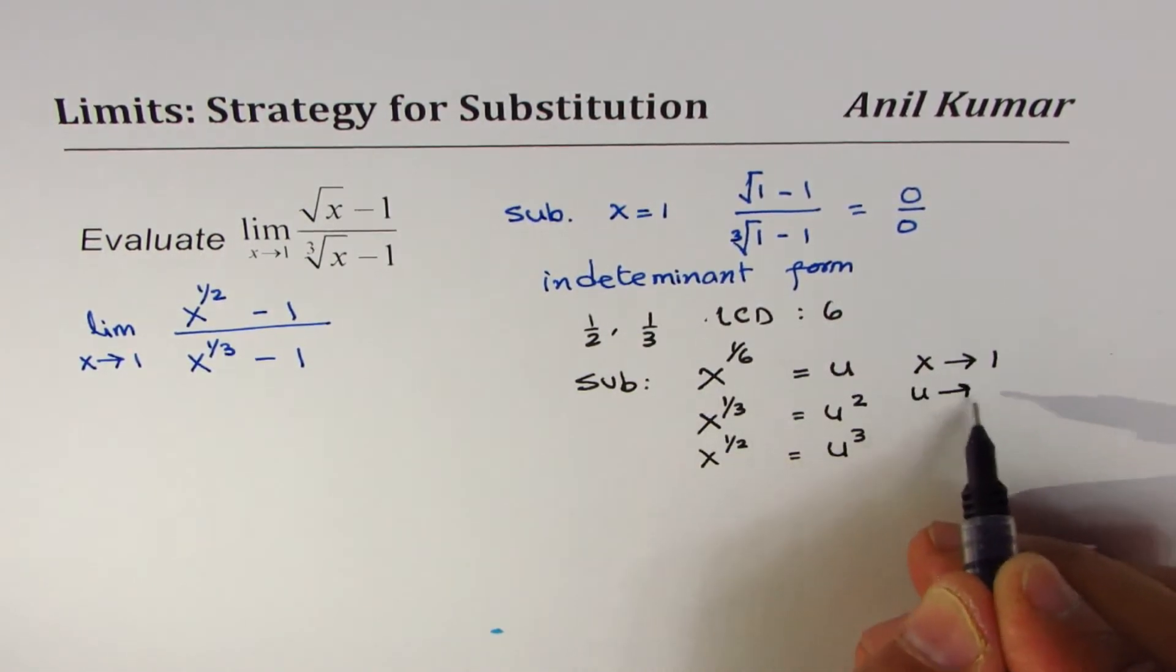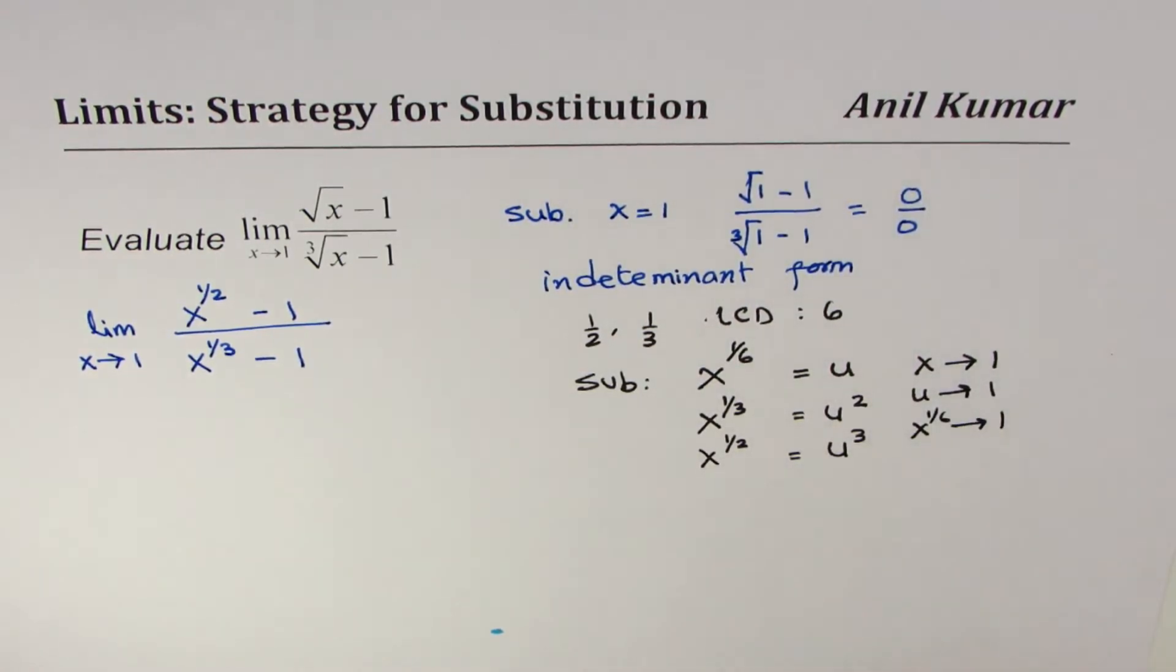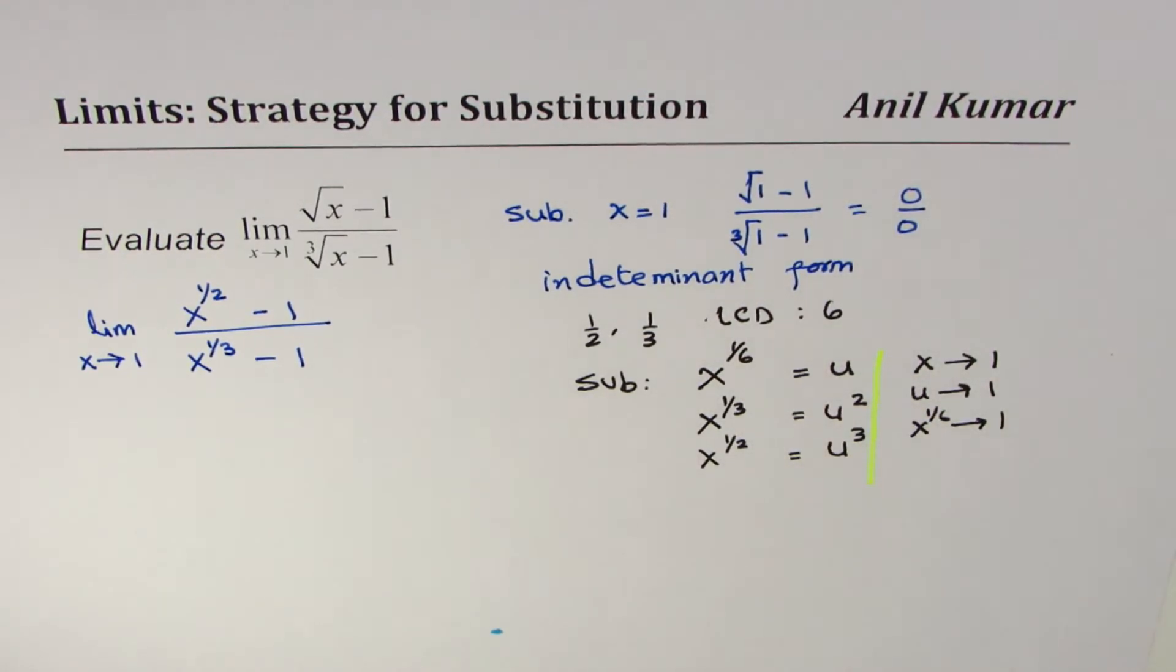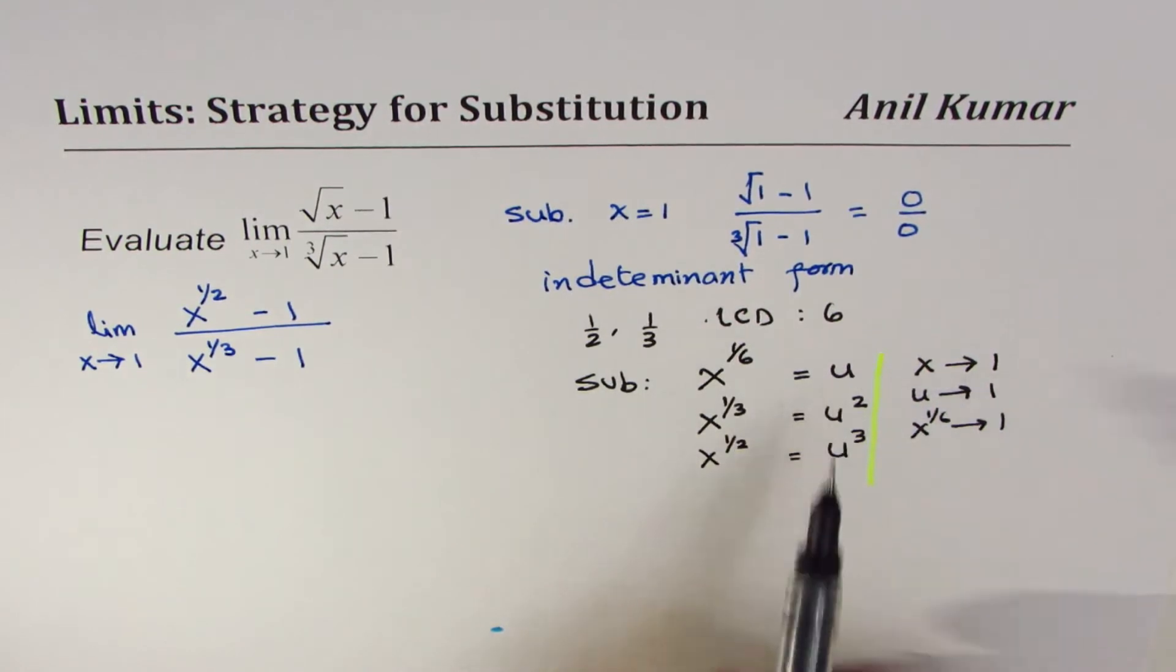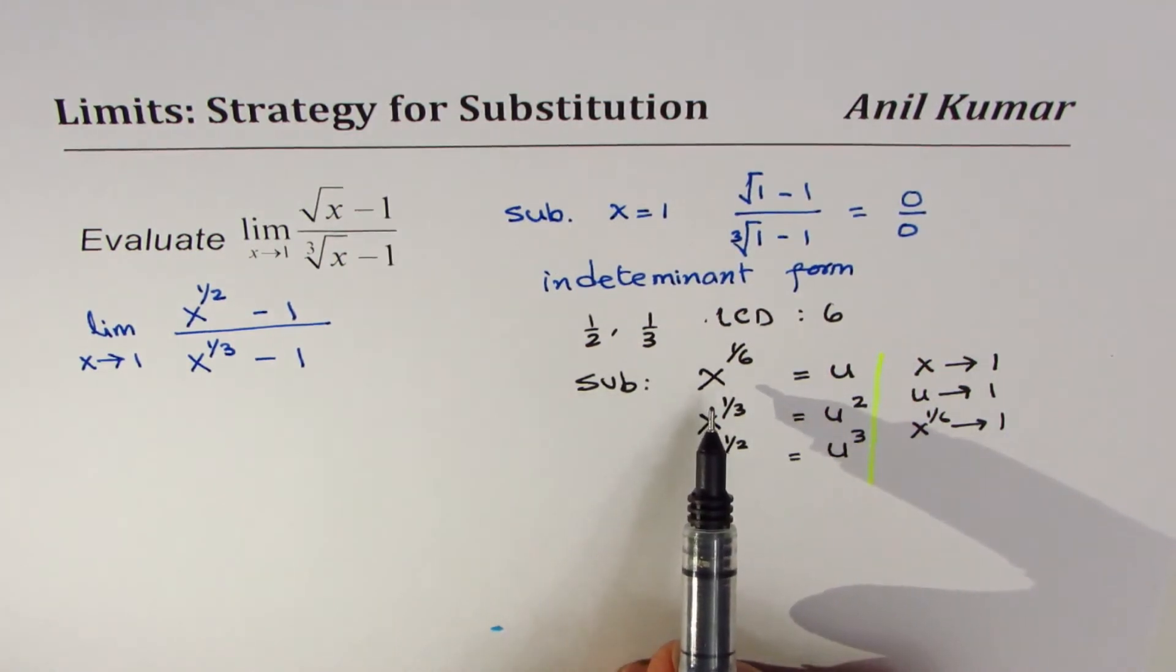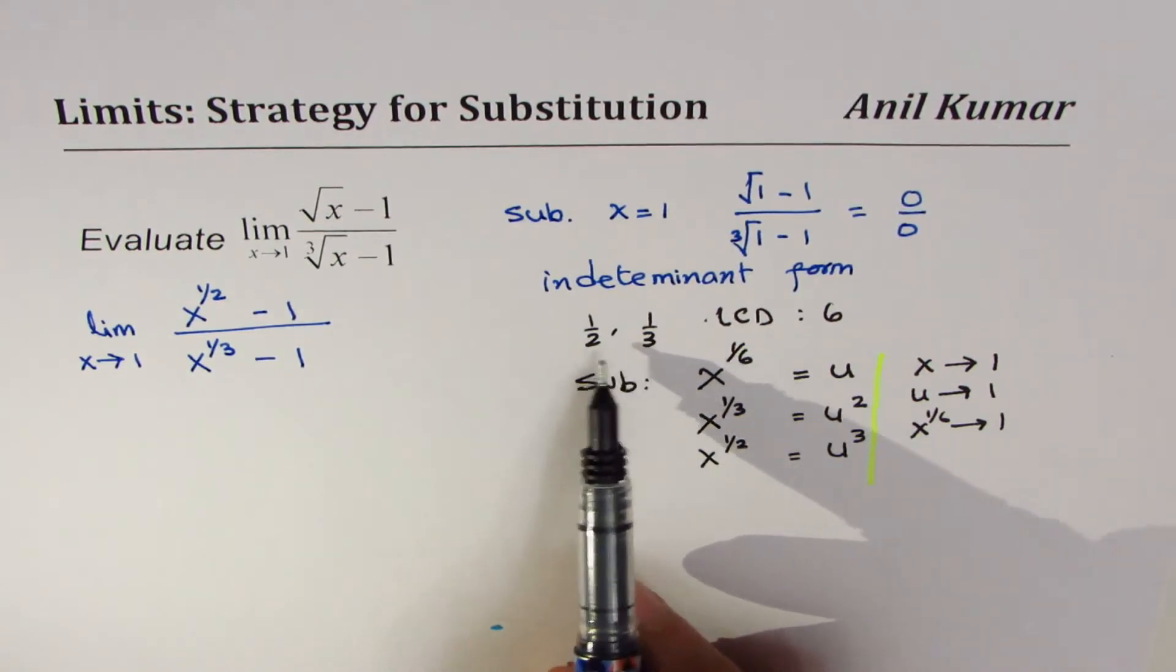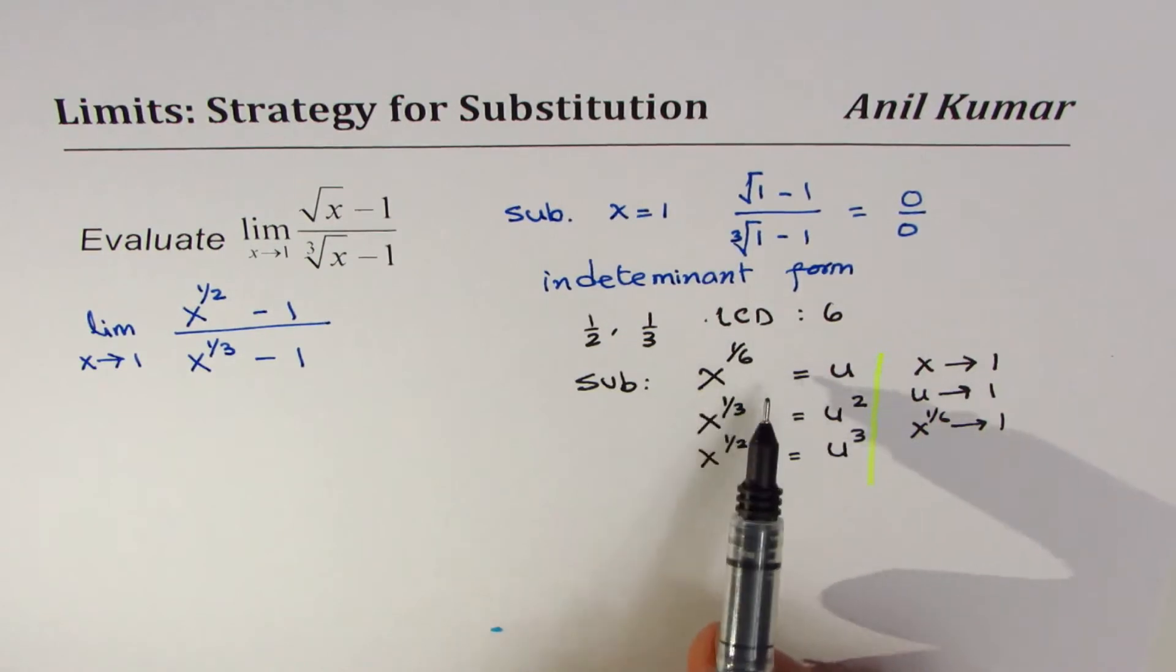Correct, so keeping that in view we will make this substitution x to the power of 1 over 6 equals to u. The important thing which we need to understand here is to understand how to get to this substitution. Since 2 and 3 has a common multiple of 6, x to the power of 1 over 6 equals to u is the right substitute.